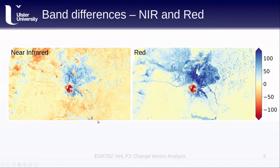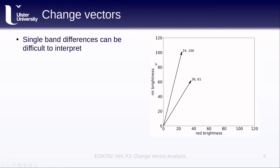We see the lake changes represented by both an increase in near-infrared and red reflectance, and we also see the clouds off to the west represented again by increases in both near-infrared and red reflectance. All of this is to say that single band differences can be quite difficult to interpret, as we have a number of different signals that could come from one or both kinds of different changes. For example, a drop in near-infrared reflectance could be because of the formation of lakes or as a result of snow and ice loss — it's very difficult to tell from the near-infrared difference alone.